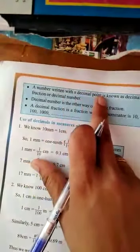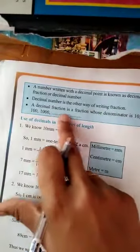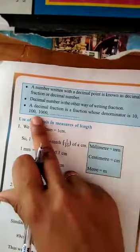Any number with a decimal point is known as decimal fraction or decimal number. Decimal number is another way of writing fractions. A decimal fraction is a fraction whose denominator is 10, 100, 1000, etc.